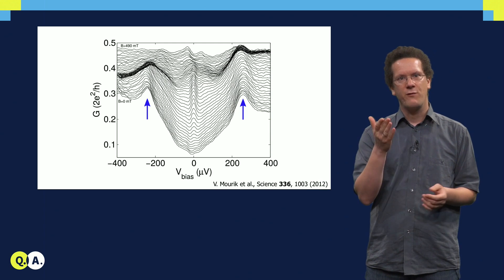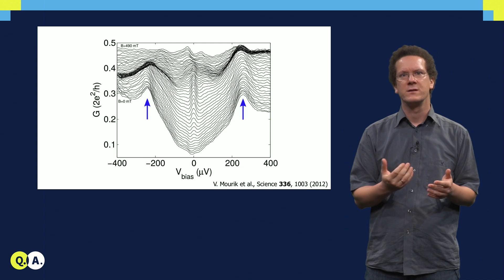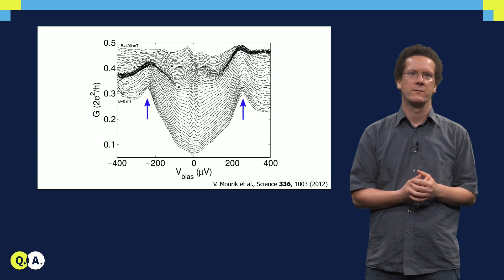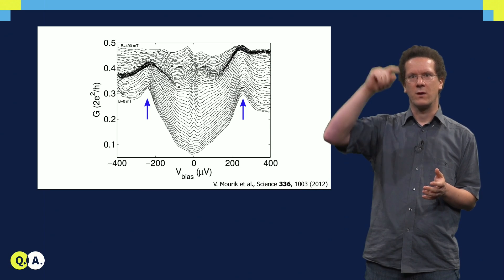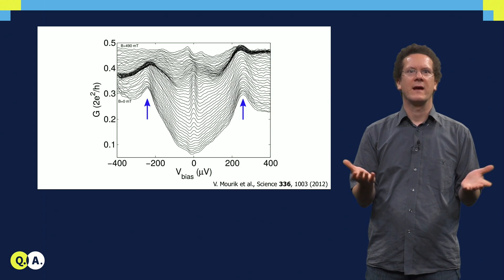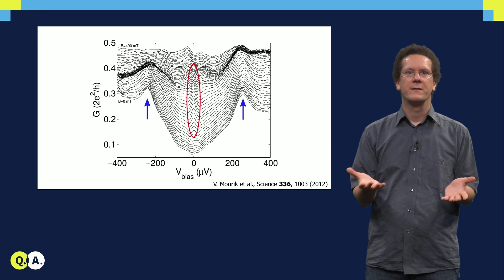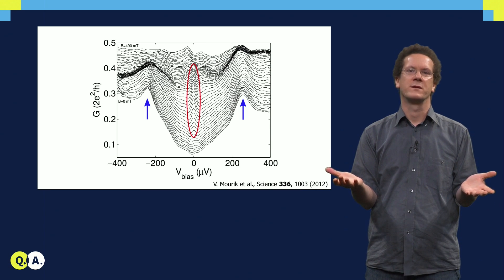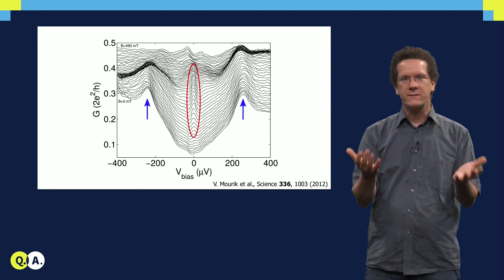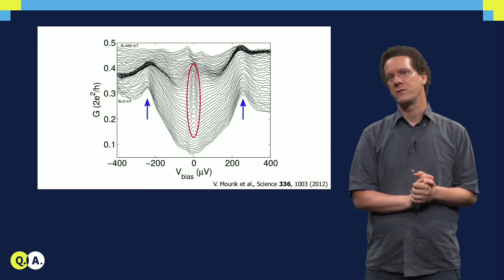The measurements for finite magnetic field are all the additional curves that are shown here in this plot. The magnetic field increases as you go further to the top. We observe that as the magnetic field is increased, suddenly a peak at zero bias voltage is emerging. This is the signature of a Majorana bound state.